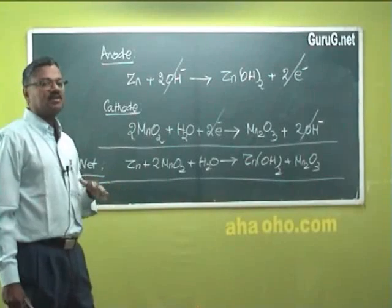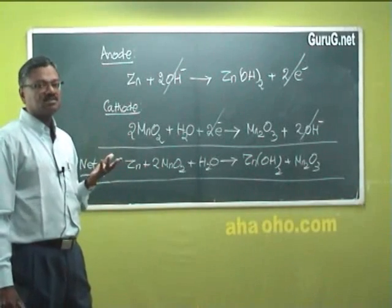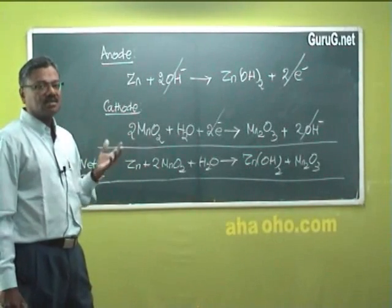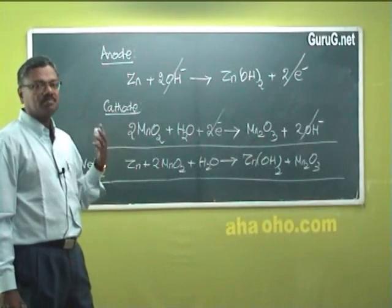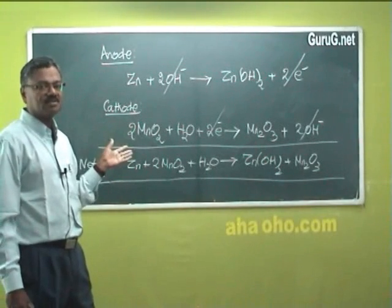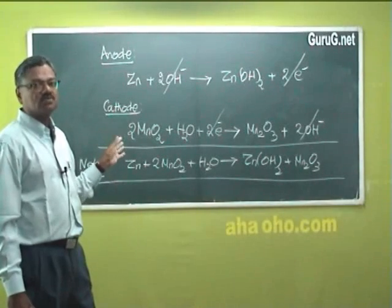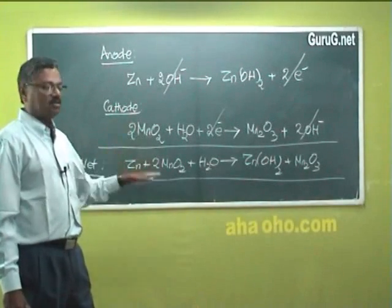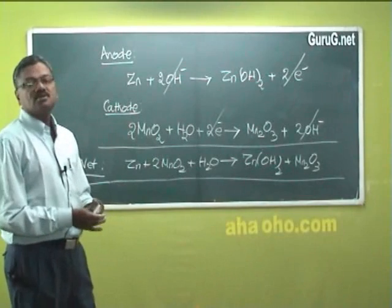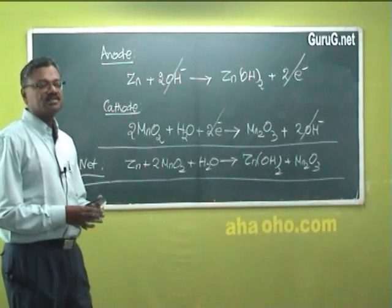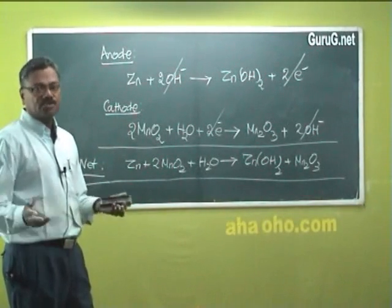When you have some advantages there will be some disadvantages. The cost is a little more compared to dry type cells — the cost of manufacture is going to be slightly higher. This is the disadvantage of alkaline batteries, yet they find applications in numerous devices.